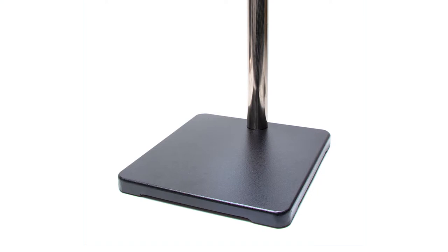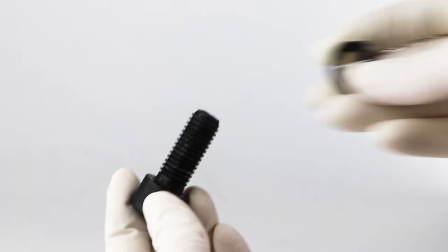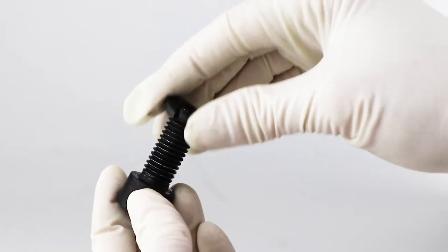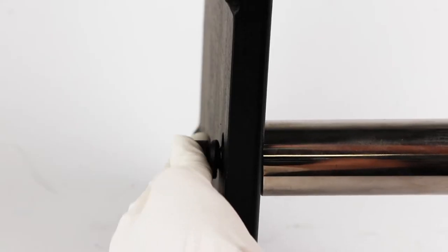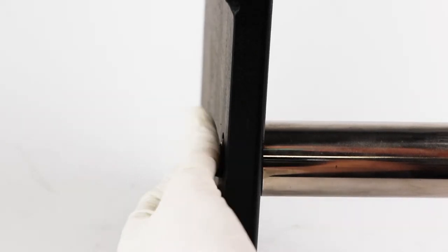The post will be perpendicular to the base. Let a second person place the locking washer on the anchoring screw and insert it into the hole through the bottom of the base so that it fits into the vertical post.